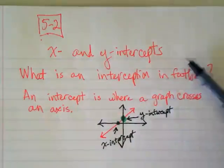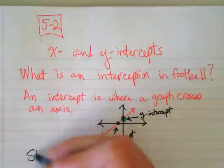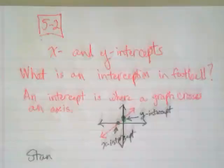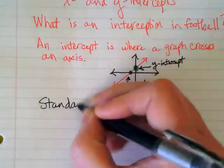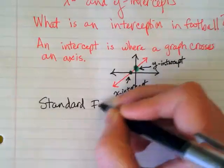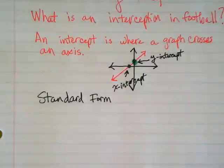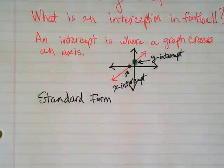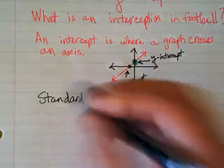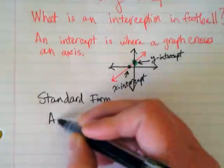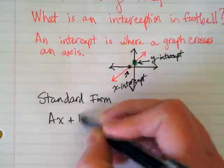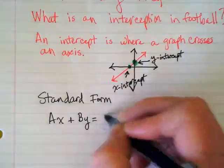I would like you guys to write down a term we talked about the other day, standard form. When we have standard form, we can use the equation to find the intercepts. And again, standard form is ax plus by is equal to c.